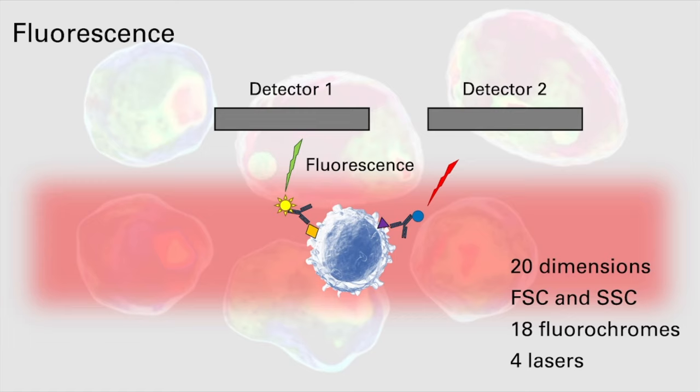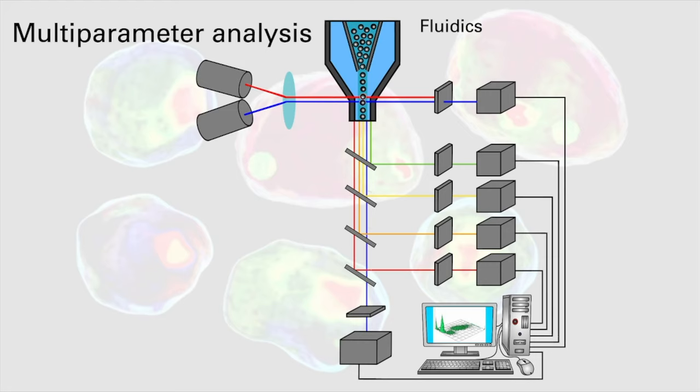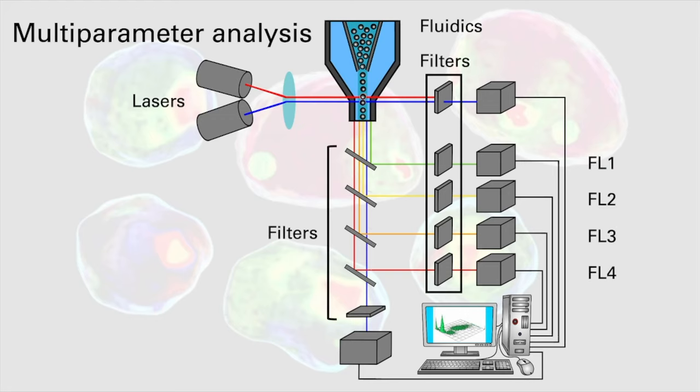Machines with five and even six lasers which can increase the number of parameters to around 50 do exist but these machines at the time of making this video are rare and incredibly expensive. In this example setup we are keeping things relatively simple with two lasers that emit light at different wavelengths with fluorescent detectors each that can detect emitted light at different wavelengths which when combined with the forward and side scatter detectors allows for up to six different parameters to be detected simultaneously.